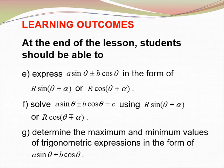Learning outcomes. At the end of the lesson, students should be able to: express A sin θ ± B cos θ in the form R sin θ ± α or R cos θ ∓ α; solve A sin θ ± B cos θ = C using R sin θ ± α or R cos θ ∓ α; and determine the maximum and minimum value of a trigonometric expression in the form A sin θ ± B cos θ.